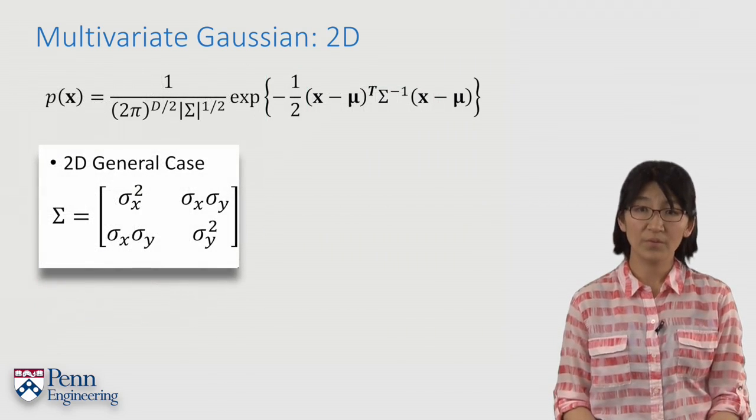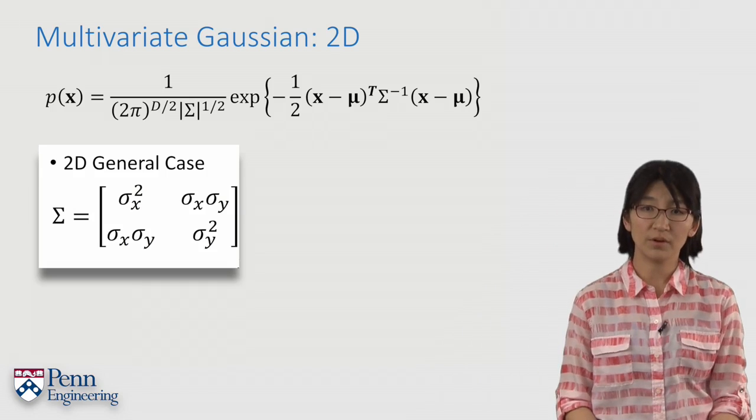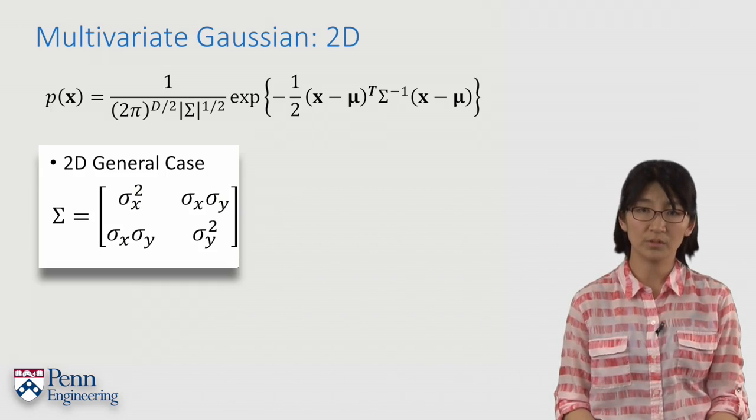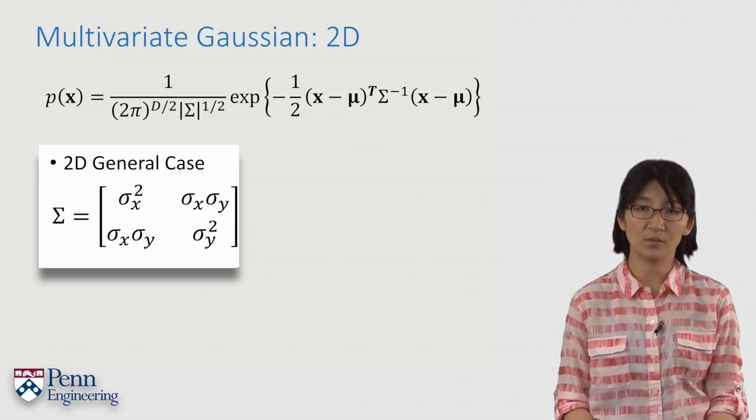However, the covariance matrix of multivariate Gaussian has some properties that we don't see in the 1D Gaussian.